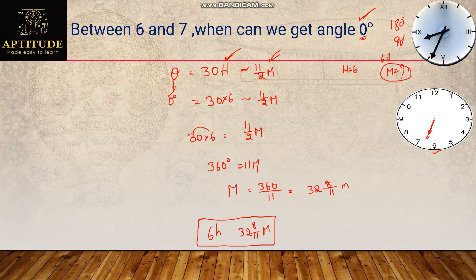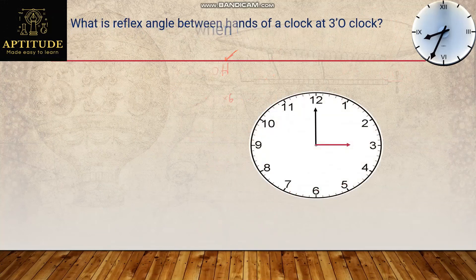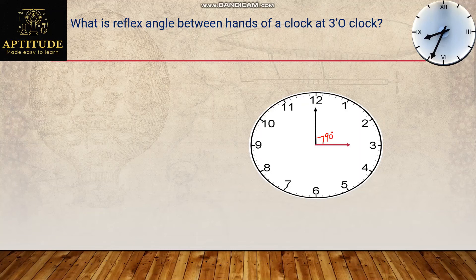Before ending the video, here is a very simple problem: what is the reflex angle between the hands of a clock at 3 o'clock? The time given is 3 o'clock, and they're asking for the reflex angle. So what is a reflex angle? When it is 3 o'clock, what is the angle between the hands? No need for a formula — just by observing, it's 90 degrees. The hands are perpendicular to each other.